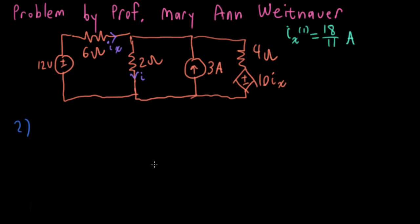And let me rewrite that up here. Okay, second, let's focus on this 3 amp source. I'll deactivate the 12 volt independent source, and I'll deactivate the current controlled voltage source here. Again, deactivating the dependent source is something the textbooks tell you you shouldn't do, but I'm going to do it anyway.